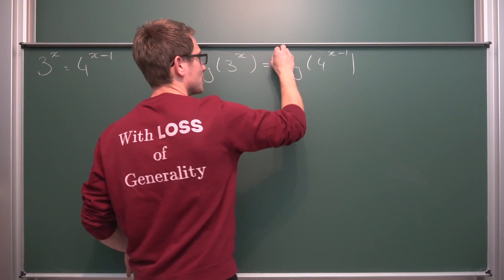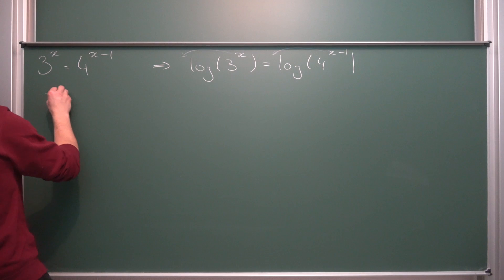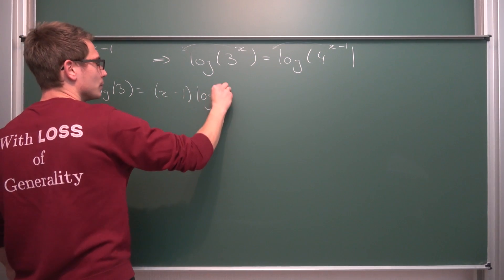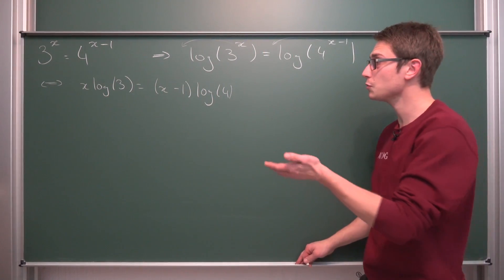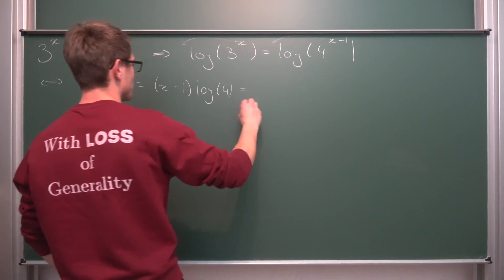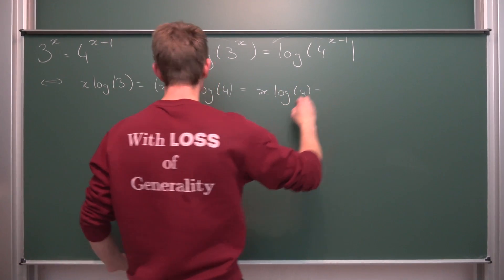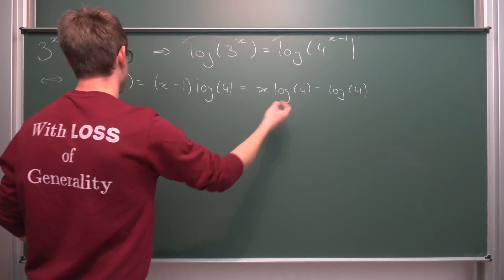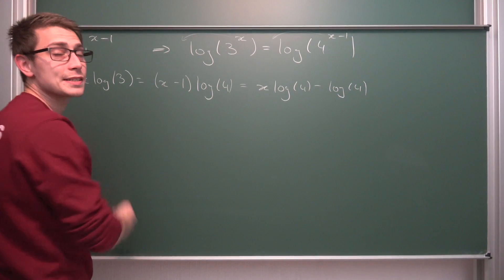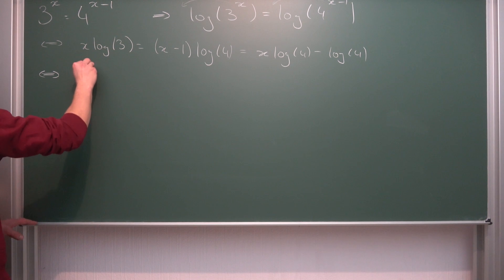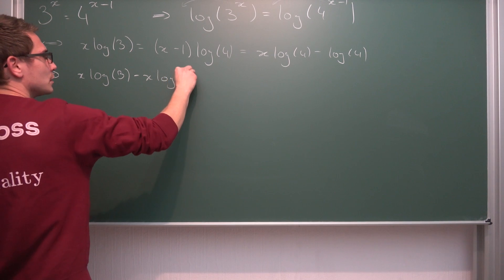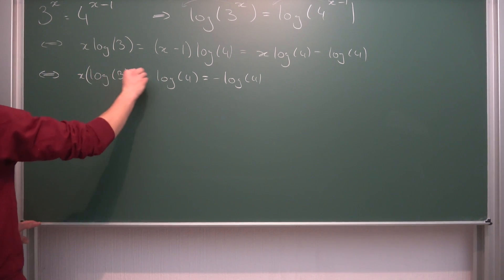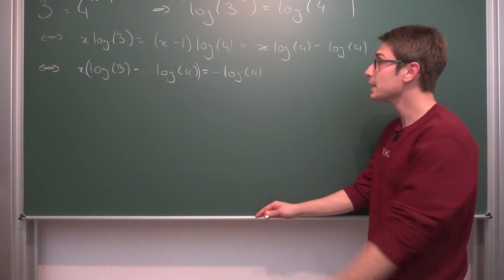We bring the exponent x to the front and the whole x minus 1 to the front. What we end up with is x times the natural log of 3 is equal to x minus 1 times the natural log of 4. Now we can distribute the logarithm of 4 into each part using the distributive property, giving us x times log of 4 minus log of 4. We can then subtract x log of 4 on both sides, getting x as a common factor on one side. So we get x log of 3 minus x log of 4 is equal to negative log of 4.